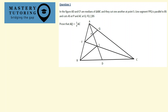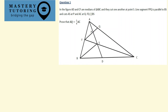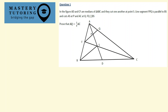Without wasting any time, let's solve this question. I have question one in front of me and it reads as follows: in the figure, AD and CF are medians of triangle ABC and they cut one another. The line segment FPQ is parallel to BS and cuts AS at P and also cuts AC at Q. We are also informed that FQ is parallel to BS.